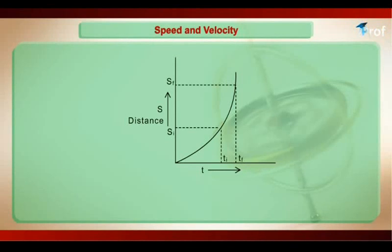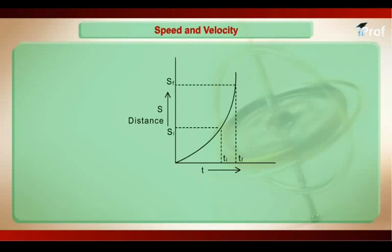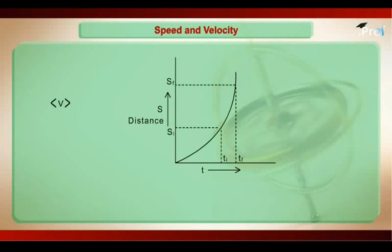As mentioned earlier, whenever average speed needs to be defined, time interval needs to be defined. We are defining average speed between T_initial and T_final. Distance covered by the body at T_initial is S_initial, and at T_final is S_final. So distance covered between T_initial and T_final is S_final minus S_initial. Therefore, average speed between T_initial and T_final equals (S_final - S_initial) / (T_final - T_initial), that is ΔS / Δt.